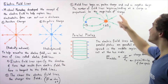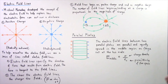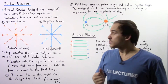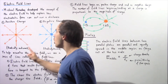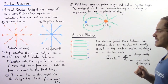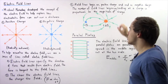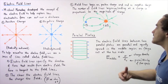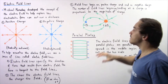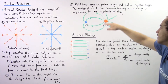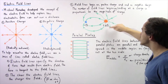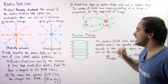The number of field lines beginning and ending at a charge is proportional to the magnitude of that charge. In this case, both charges have the same quantity, so the number of field lines going outward and inward will be exactly the same. But in the following case where the positive charge has twice as much charge as the negative one — if the negative has four, the positive will have eight field lines, as shown in the diagram.